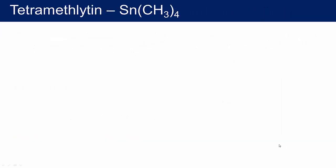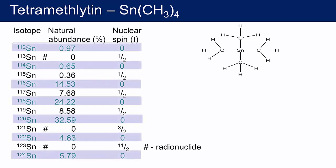Now let's consider a slightly more complicated molecule. Tetramethyl tin has a central tin atom bound to four chemically equivalent methyl groups. This two-dimensional schematic shows the bond connectivity. We know about the isotopes of hydrogen, and that we can ignore the rare deuterium isotope. We know about the isotopes of carbon — mostly non-magnetic carbon-12, but about 1% is carbon-13 with nuclear spin I equal to one half. In this molecule we have one atom of tin, and we need to look up what isotopes of tin exist, their natural abundances, and their nuclear spin moments.